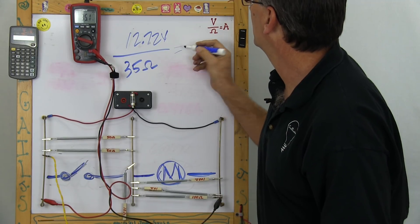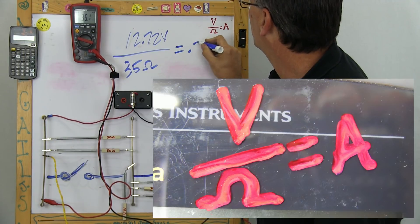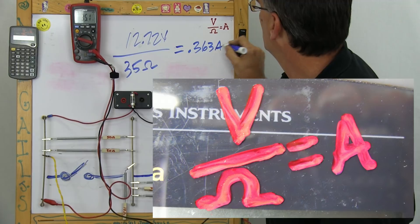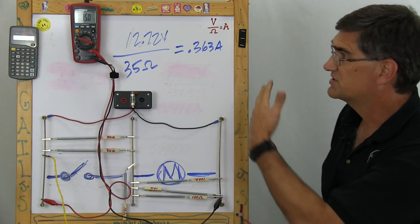So I should be getting .363 amps, and here's the cool thing, .363 amps. They've done all the math here, right in front of you, so you can see it.